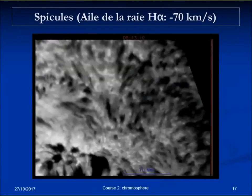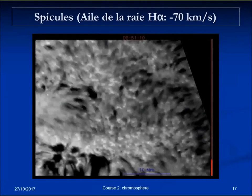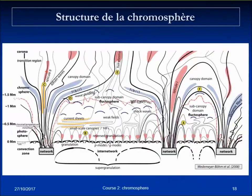If even a small fraction of what is ejected manages to escape, there is largely enough to feed the solar wind. A cartoon produced about 10 years ago summarizes the topology of the chromosphere well. At the bottom is the photosphere with granules, then a supergranule with outward flow bringing magnetic field upward from inside the supergranule toward the edges, where flux tubes concentrate.